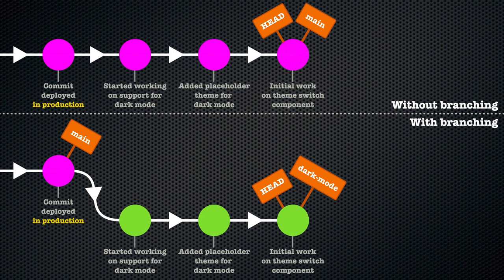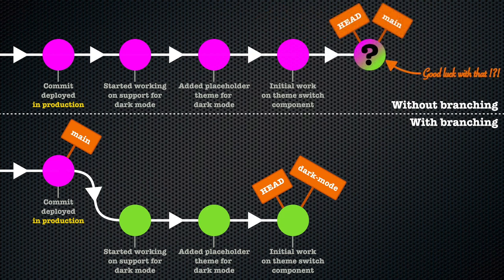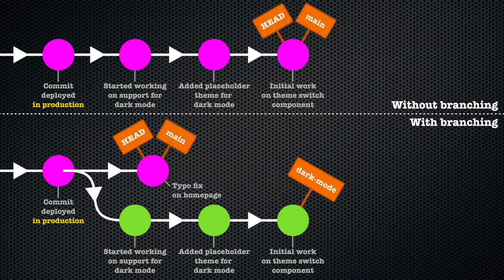If you had been doing your dark-mode work on the main branch, you would be in a real pickle right now, because you would have mixed your new dark-mode work with the production code. Fixing the typo would have had to wait, or you'd have to somehow undo the work you did so far, or find a way to disentangle those changes from what was there before. Don't let this happen to you. Embrace branching in Git — branches are not hard to understand, and we'll show you exactly how to make them in the next chapter.